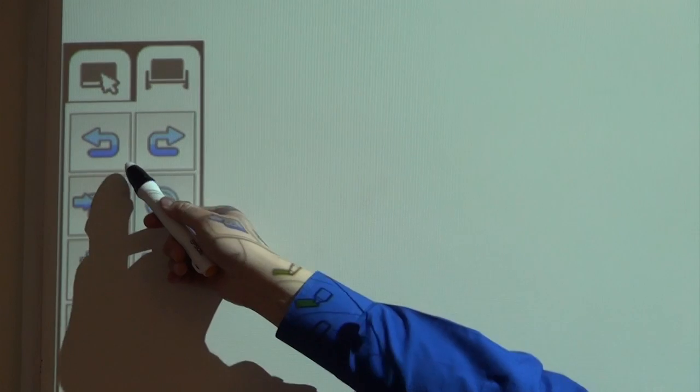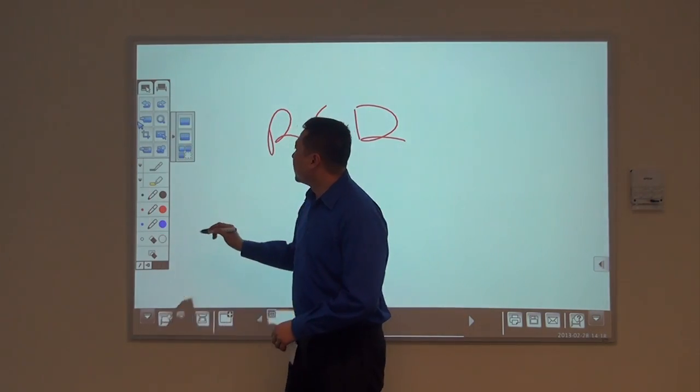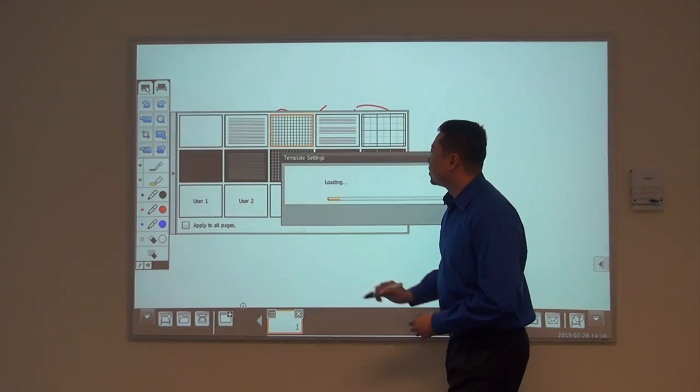Starting from the top, we have undo and redo. That's undo, redo. Here we have our templates. I'm going to insert a grid.